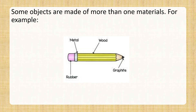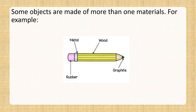Some objects are made of more than one material. For example, this pencil that we use every day. This pencil is made of wood, metal, rubber, and graphite. These materials make it easy to use for different purposes. To write, we use the graphite material. To erase, we use the material rubber. To hold the razor firmly, a small metallic cap is used. And of course, the graphite is covered with wood for safety and grip. Amazing, isn't it?